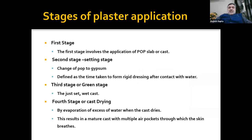Coming to stages of plaster application: the first stage involves application of the POP slab or cast. The second stage, also known as the setting stage, is the conversion of POP to gypsum — defined as the time taken to form a rigid dressing after contact with water. The third stage, or green stage, is a just-set wet cast. The fourth stage, cast drying, occurs by evaporation of excess water when the cast dries, resulting in a mature cast with multiple air pockets through which the skin breathes.